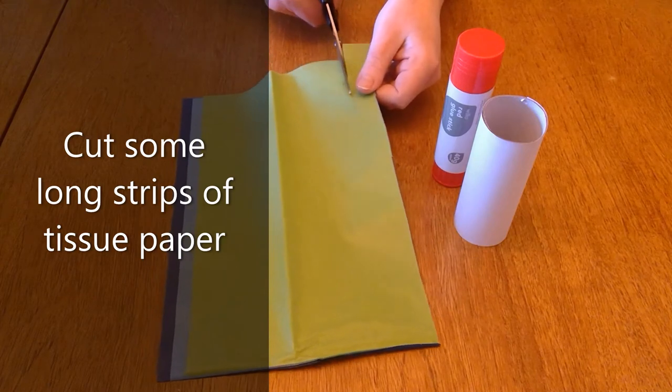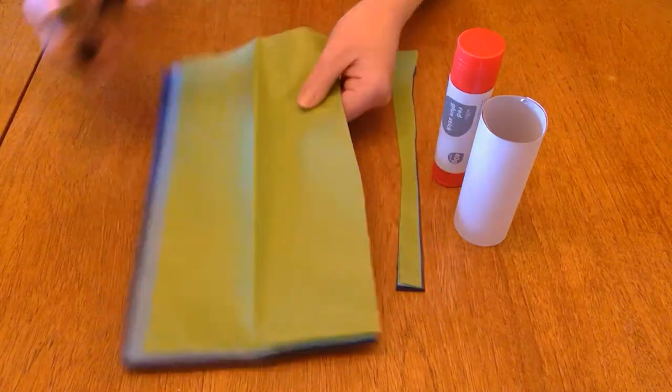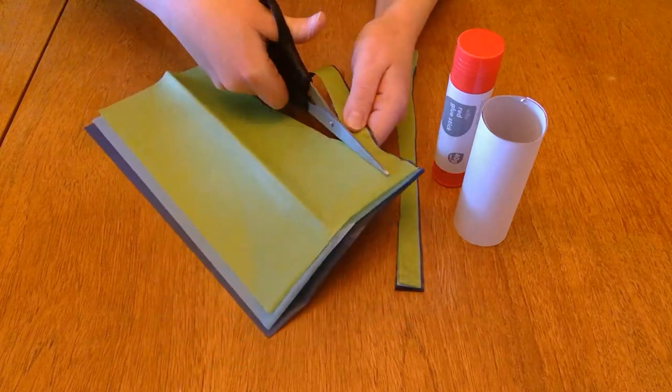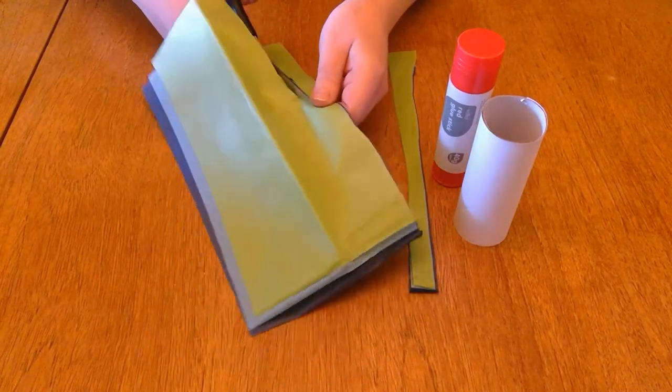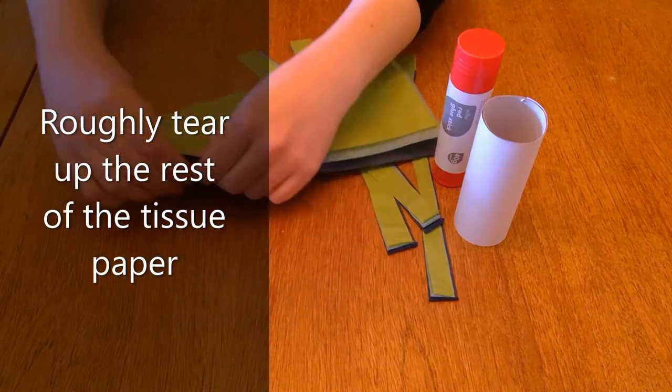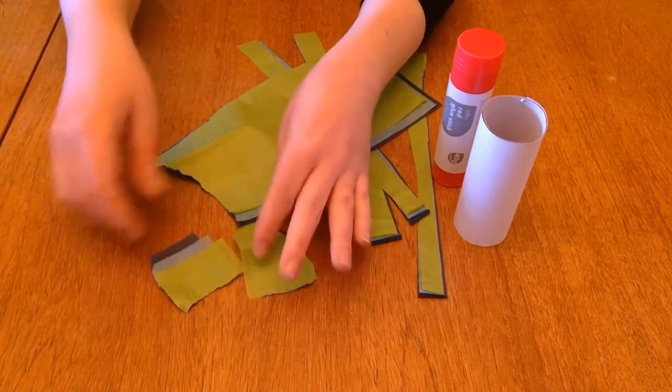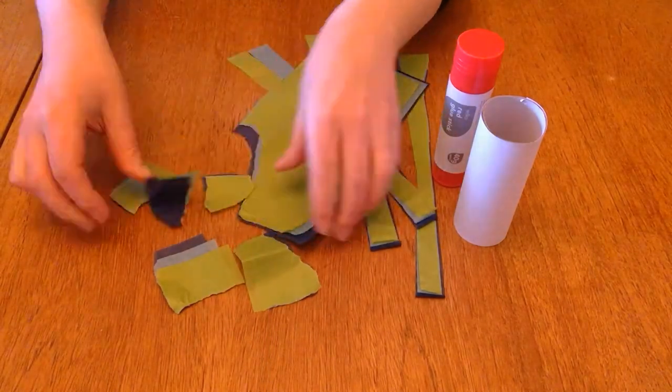To start, I'm going to cut some long strips out of my tissue paper. You can use whatever colors you like, I've gone for these nice weathery colors here. With the rest of my tissue paper, I'm going to roughly tear it up into some squares, and I'm going to use those to decorate my cardboard tube.